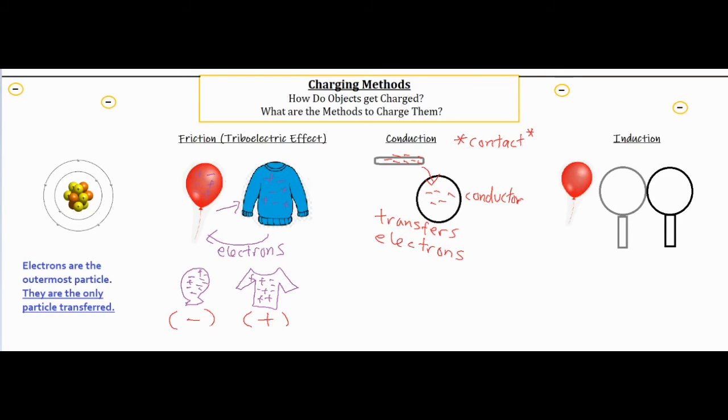And usually conduction is defined as charging through contact. Sometimes if the thing is really charged up they might just get really close and then within an inch of space or separation some of those electrons might already jump over to the conductor. But for the most part, it is charging through contact.